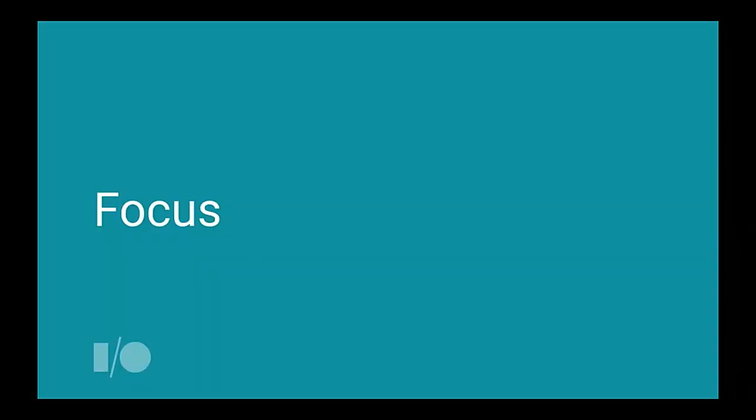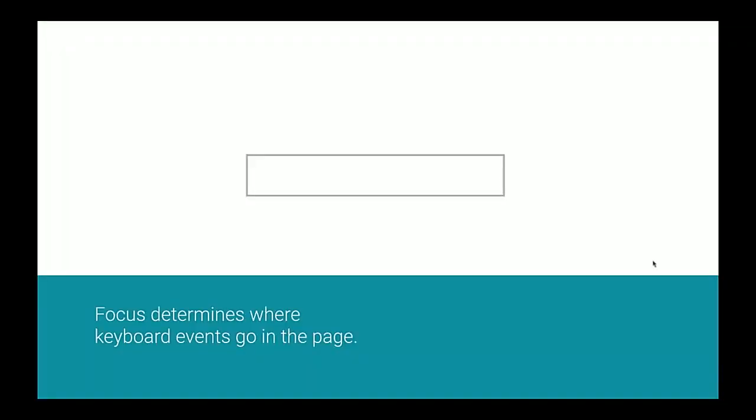With that checklist in hand, we're now ready to start exploring some of the nuts and bolts functionality we need to add to our application. I want to start off by looking at focus. What does it mean for something to have focus? Focus is one of these underlying bedrock key things in accessibility. In a nutshell, focus just helps determine where keyboard events go on the page — that is the main takeaway. Focus determines where your keyboard events go on the page.